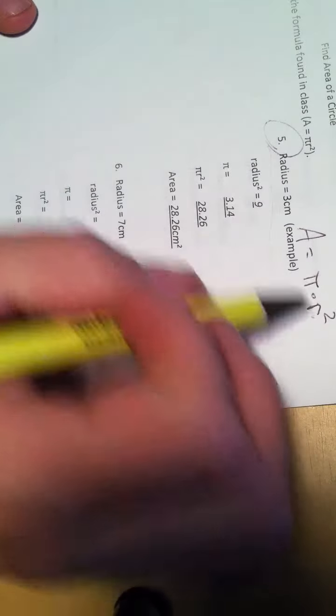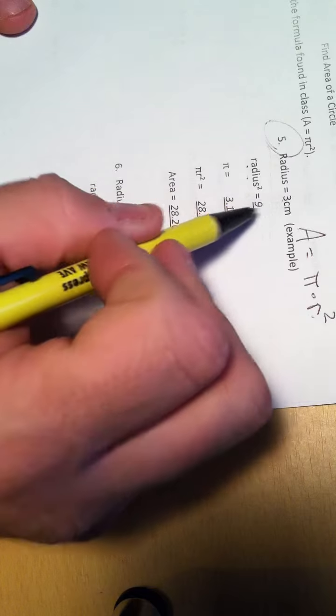So, the first thing we're going to need is the radius squared. The radius squared, 3, 3 times 3 is 9.